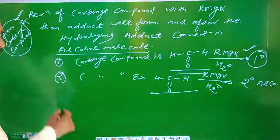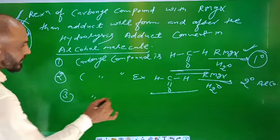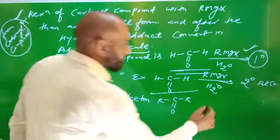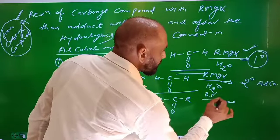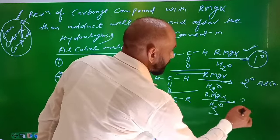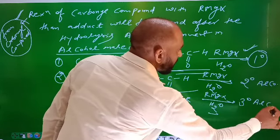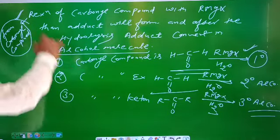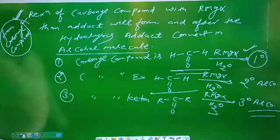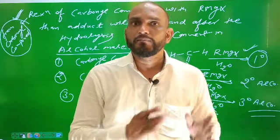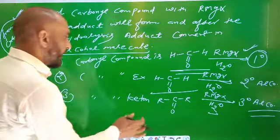If the carbonyl compound is a ketone, then with RMgX and hydrolysis, the ketone converts to a tertiary (3°) alcohol. This reaction is very important because from this reaction all types of alcohol may be formed.